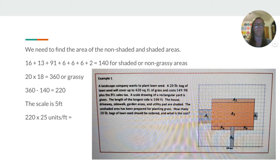Then we have 20 times 18 to find out the grassy areas, which is 360. So, we subtract those.